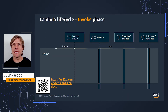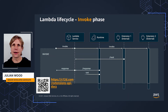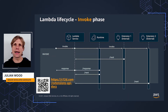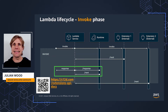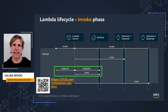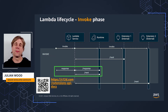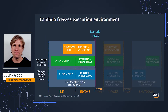The invoke phase ends after the runtime and all extensions signal that they are done by sending a next API request. The Lambda documentation shows the flow for invoke and how the runtime, internal and external extensions interact. You can specifically see how the runtime responds back to Lambda before the external extension sends its next response — the performance improvement I talked about earlier.